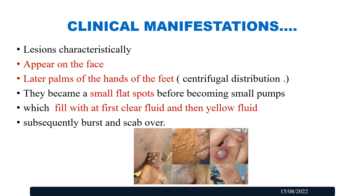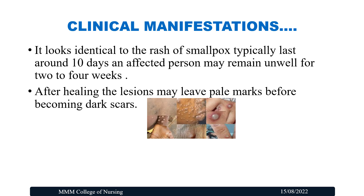The lesions become small flat spots before becoming small bumps, which fill first with clear fluid and then with yellow fluid. Subsequently they burst and a scab is formed. These lesions look identical to the rash of smallpox, typically lasting around 10 days, and affected persons may remain unwell for 2 to 4 weeks. After healing, the lesions may leave pale marks before becoming dark scars.